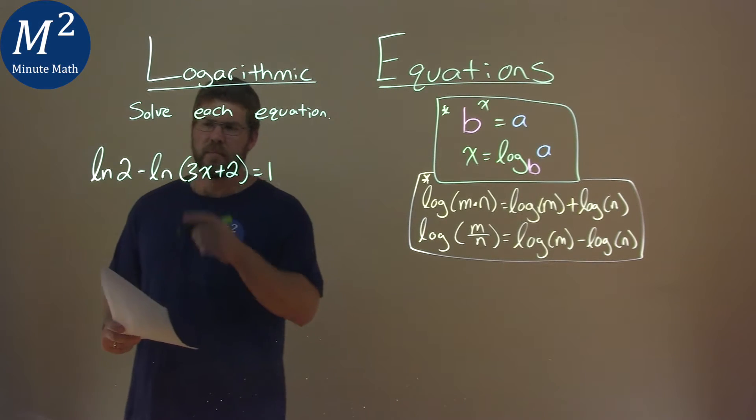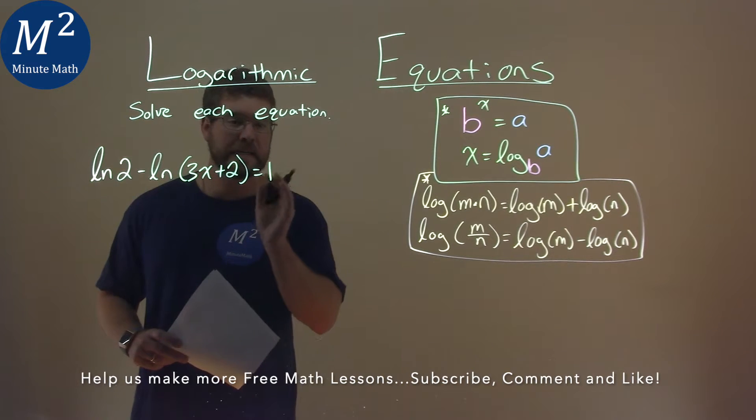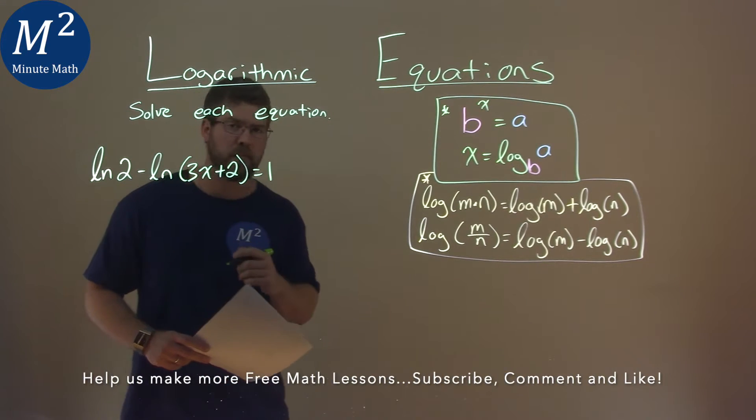We're given this problem right here. The natural log of 2 minus the natural log of 3x plus 2, that's equal to 1 and we have to solve this equation.